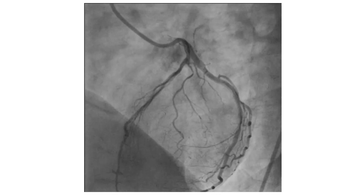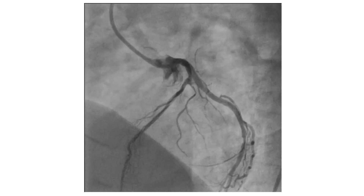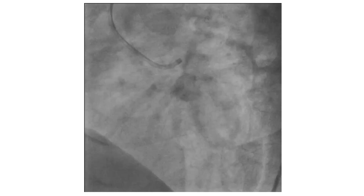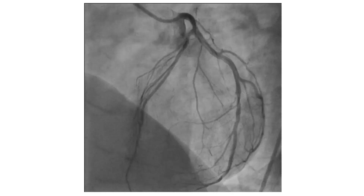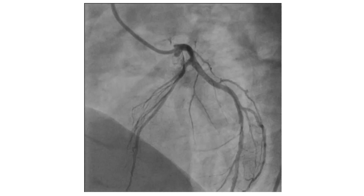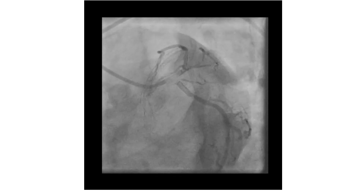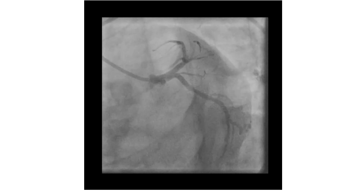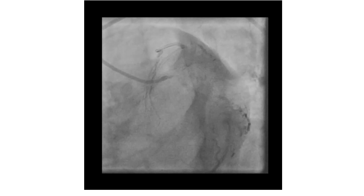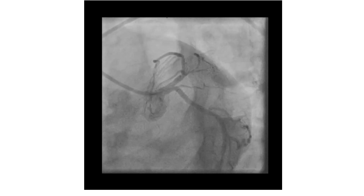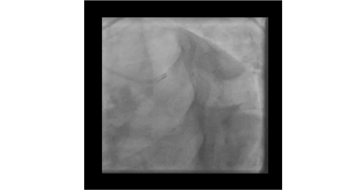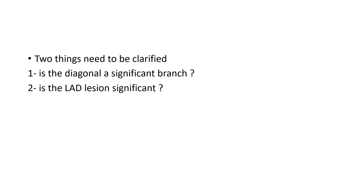This is an LAO cranial view. It shows the diagonal to be a long artery but with a small caliber. This is a spider view. The first diagonal has a critical lesion and the LAD lesion is still not clarified. So there are two things that need to be clarified: first, whether the diagonal is a significant branch, and second, to assess the significance of the LAD lesion.